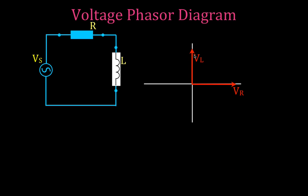Now we're going to draw the voltage phasor diagram. You can see I brought with me the vector representing the voltage across the inductor and the vector representing the voltage across the resistor. I want to add these two vectors up to get the source voltage. I'm going to move one of these vectors — as long as I don't change its magnitude and direction, I can move it anywhere I want — and add those two up head to tail. The resultant vector represents the voltage of the source. We have a simple right triangle, so we can use the Pythagorean theorem to calculate the magnitude of this vector. We also have the angle phi, which is the angle between the current and the voltage for this RL circuit.